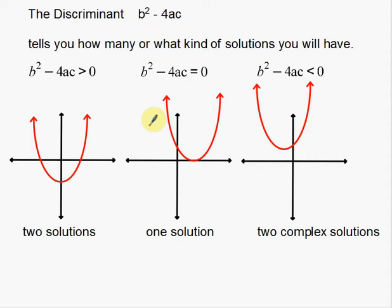Looking at the pictures we have here, you can kind of tell — here's a parabola, here's another parabola, here's another parabola. These are the three different things that can happen. Whenever you solve quadratic equations, you're basically looking for zeros. You set the equation equal to zero and solve. When you do that, you're finding the points where the parabola crosses the x-axis — either two points, or one point.